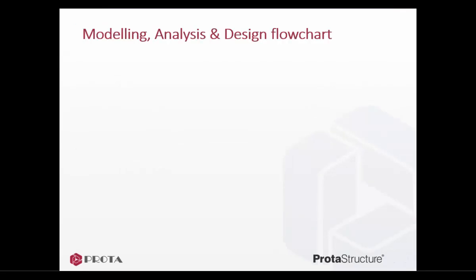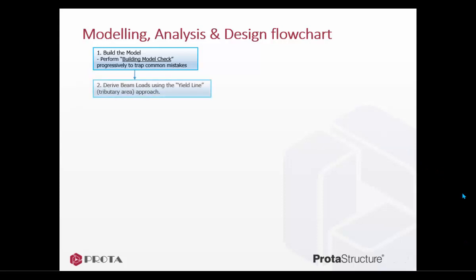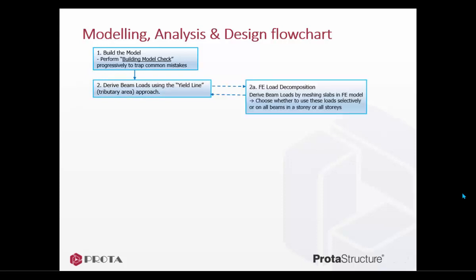Let us now look at the modeling, analysis, and design flowchart. We first start by building a 3D physical model. It is highly recommended you perform building model checks progressively to trap common modeling mistakes as you build the model. As you model beams and slabs, the beam loads are automatically derived using the default yield line or tributary area method. FE load decomposition is the alternative method to yield line slab load calculation. This method derives the beam loads by meshing the slabs in the FE model, and is able to capture the localized effect of slab openings and concentrated slab loads such as slab line loads. You can then choose whether to use this method on selected or all beams in selected stories or for the whole model.